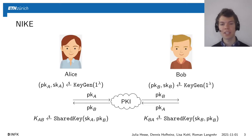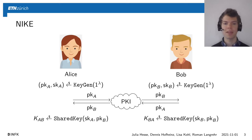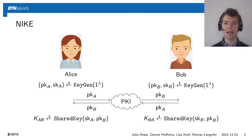Non-interactive key exchange, or NIKE for short, is a cryptographic primitive that works as follows. We have a key generation algorithm that every user can use to generate public key/secret key pairs. Using a public key infrastructure, users can get authenticated copies of the public key of every other user. Finally, they can use a shared key algorithm to generate a shared key using their own secret key and the public key of somebody else. When Alice and Bob both do this, they should get the same shared key.